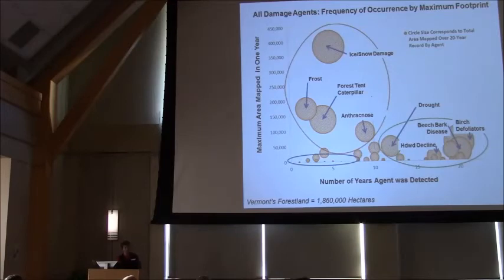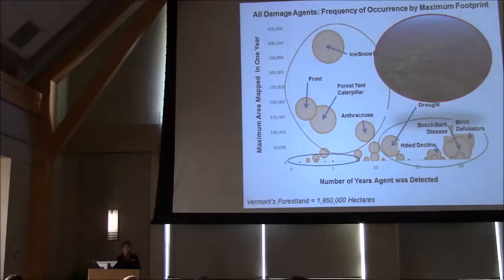So over in the lower left-hand corner in the blue circle, those are the really minor agents. We only saw them a couple times in 20 years, and they didn't cover much area. And in the lower right, those are the more chronic damages, the ones that we see frequently, some of them every year. They still don't cover that much area. And up in the upper left, those are the episodic damage agents, the ones that cover a pretty big area, but we don't see them very often. What we didn't see is anything that occurred over a really extensive area and occurred very frequently. And we're lucky in Vermont, there's some regions of the country that are getting that kind of damage, if you think of the bark beetle epidemics out west.